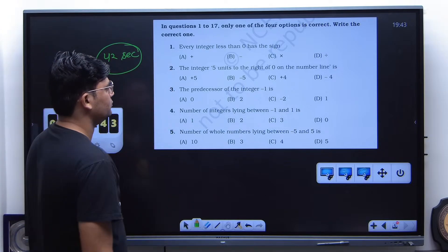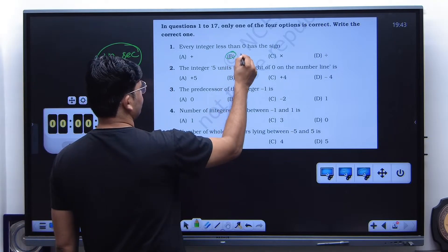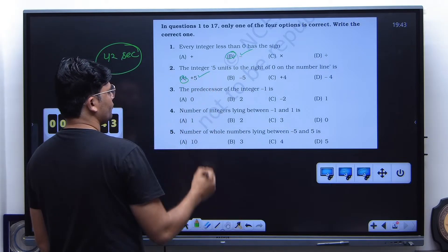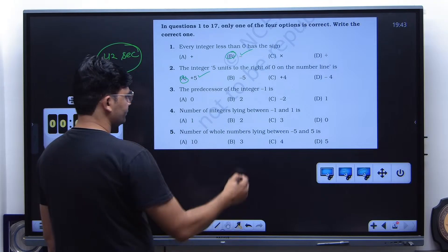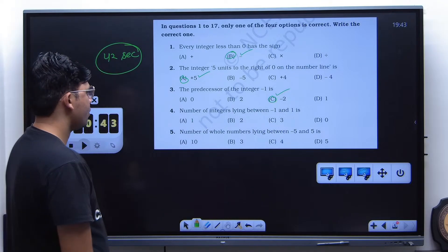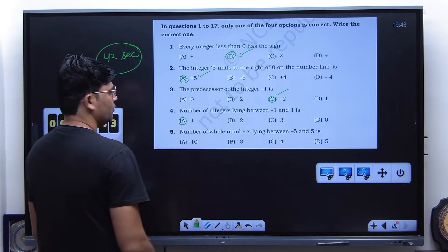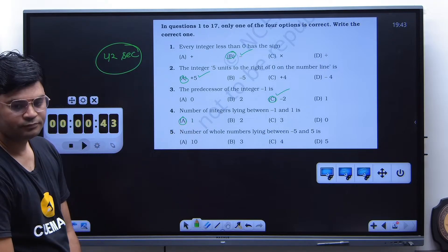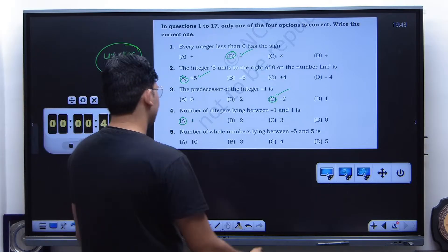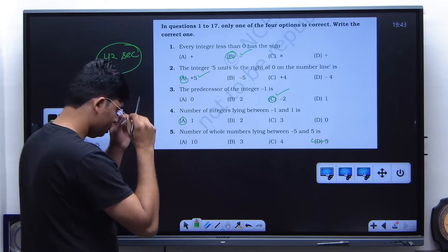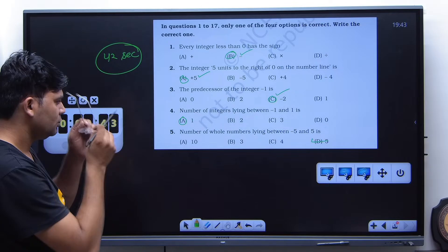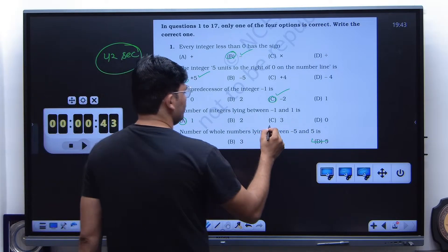I have the answers. Wonderful. So 42 seconds. The first one is B. Second one is A, great. Third one is C. Yeah, C, wonderful. Fourth one is A. Fifth one is D. D, D, yeah. Between, it is asking you between.